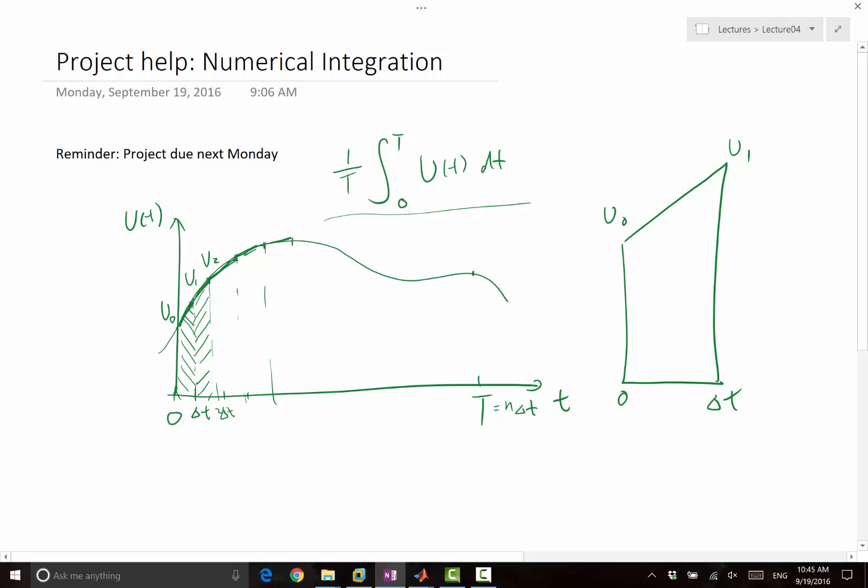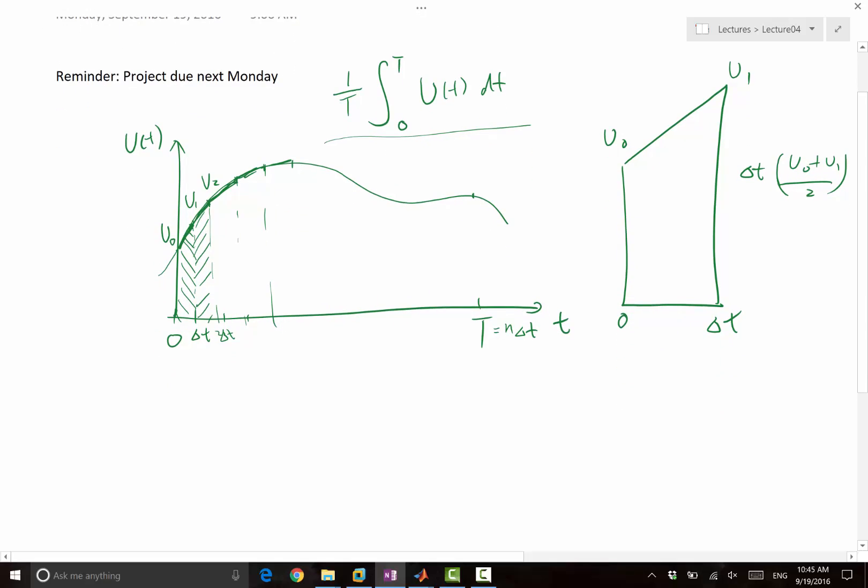Yes. It's delta T times U0 plus U1 over 2. Exactly. So that's how much area is under this curve. So how much area is under the summation of all these linear lines? What is the summation of all the areas?